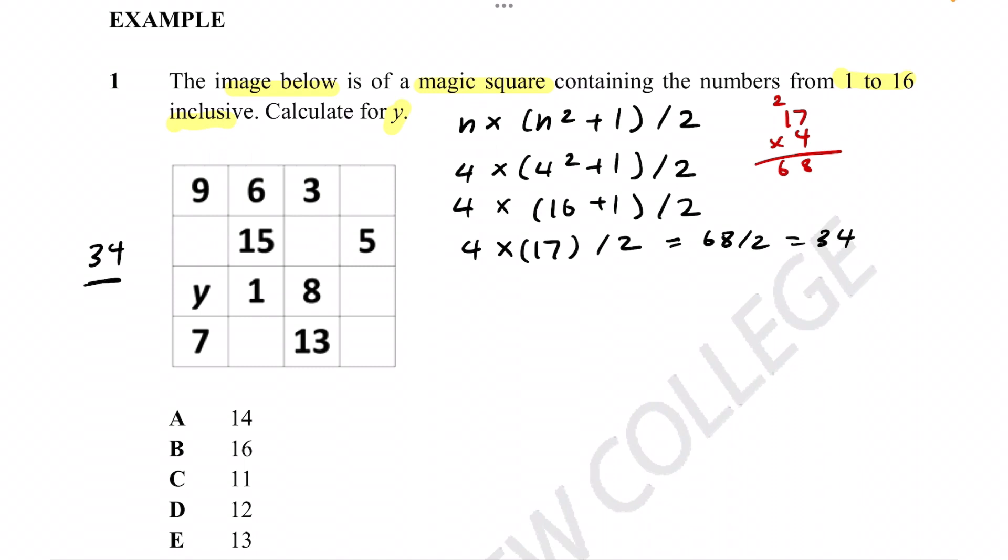With that in mind, now we just have to do some subtraction and some addition. Let's start with figuring out what this square is. That would be 34 minus 9 minus 6 minus 3. We can quickly do this by adding these three numbers together. We know 6 plus 3 is 9 and 9 plus 9 is 18. So we can assume it's 34 minus 18, which equals 16.